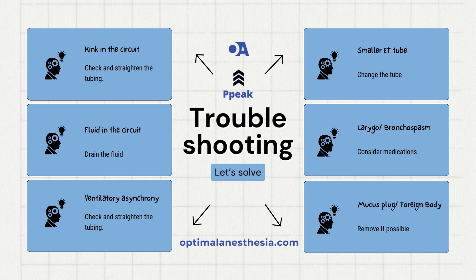Here are some common causes and practical solutions for high peak pressure with normal plateau pressure. First, a kink in the circuit: imagine a garden hose bent sharply, blocking water flow — the same can happen with ventilator tubing. Solution: simply examine and straighten the tubing. Next, fluid accumulation in the circuit, like a water pipe with waterlogged sections slowing everything down. Solution: clear the fluid from the circuit to ensure smooth airflow. Sometimes the patient might be biting the endotracheal tube, like pinching a straw while trying to sip your drink. Solution: increase sedation or insert a bite block to keep the airway open.